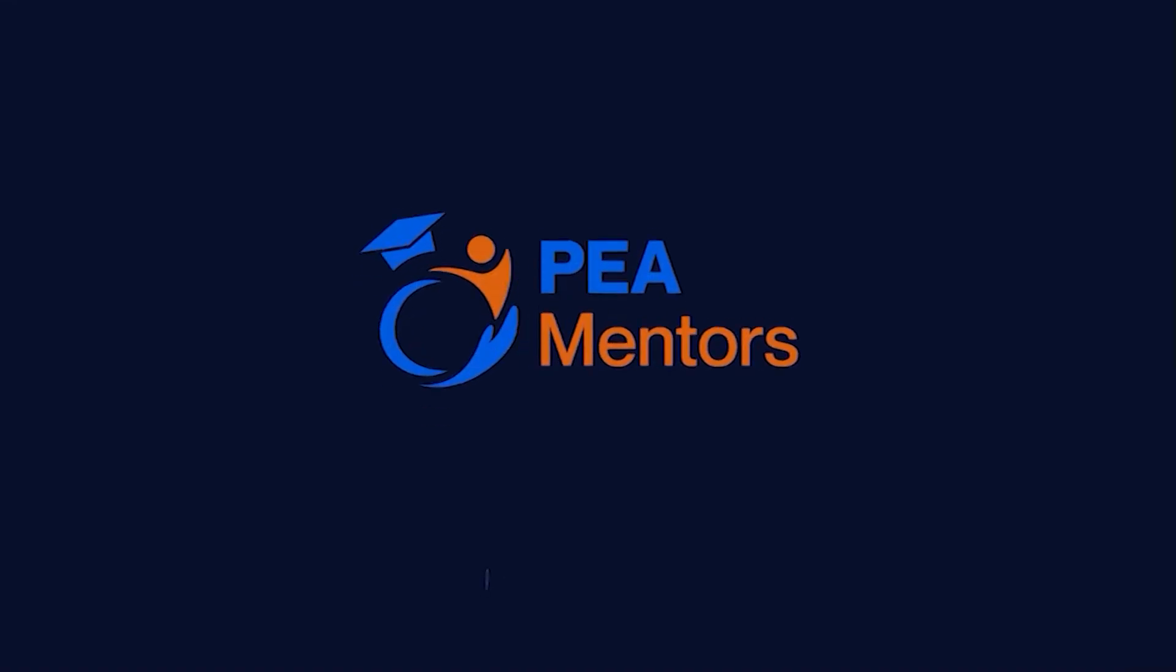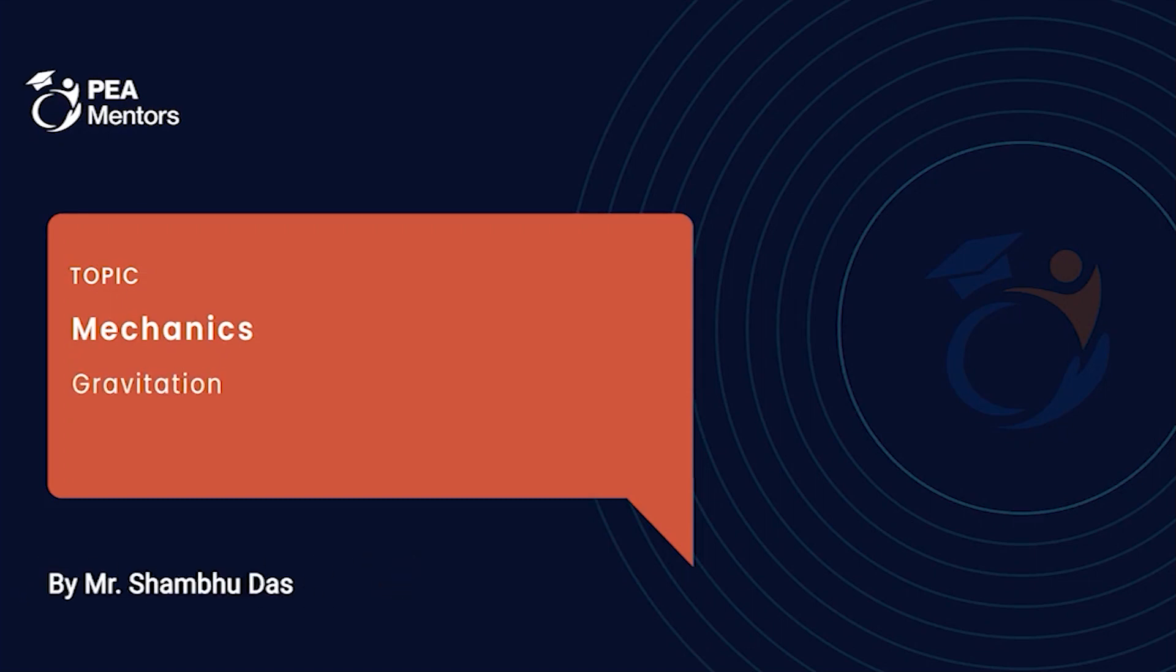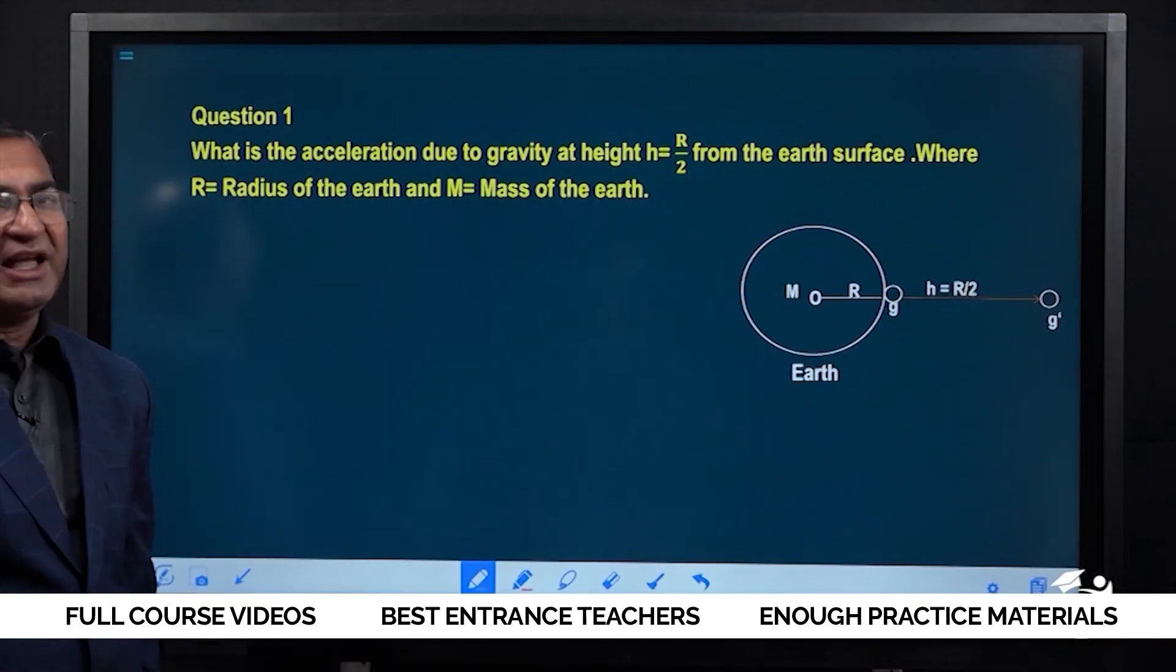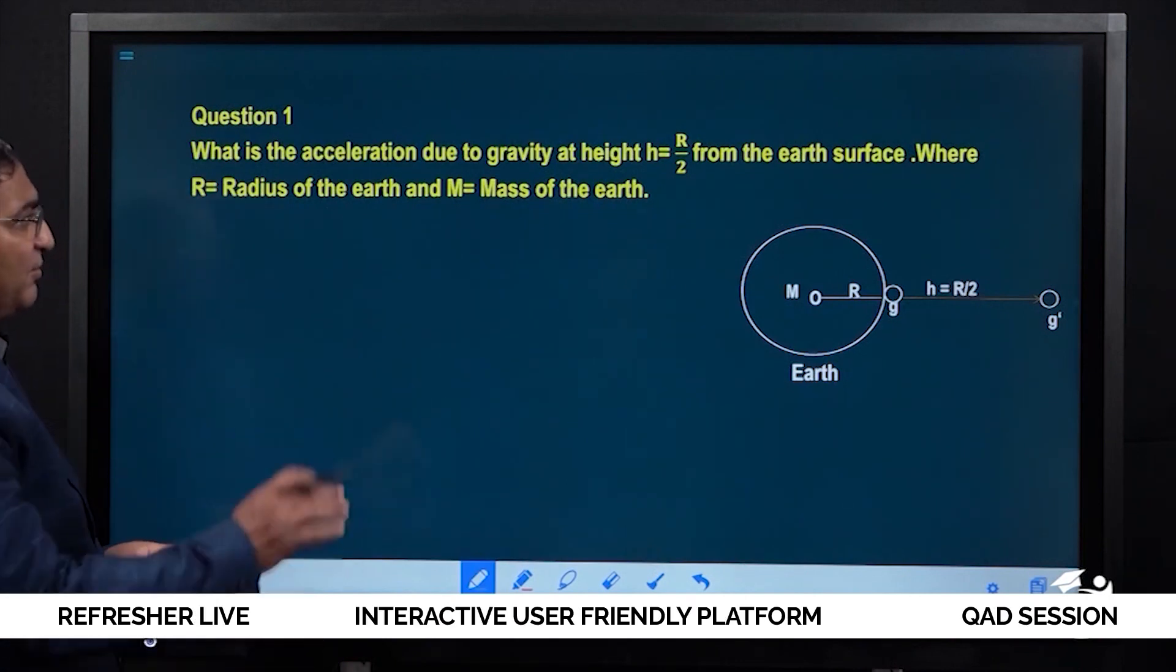What is the acceleration due to gravity at height h equal to r by 2 from the earth's surface, where r is radius of the earth and m is mass of the earth?